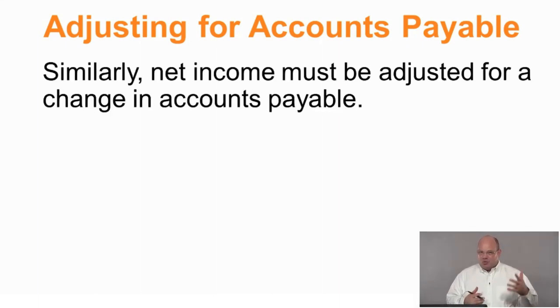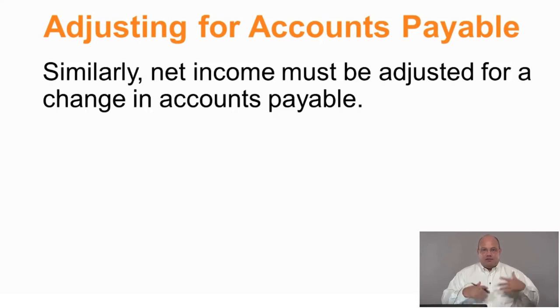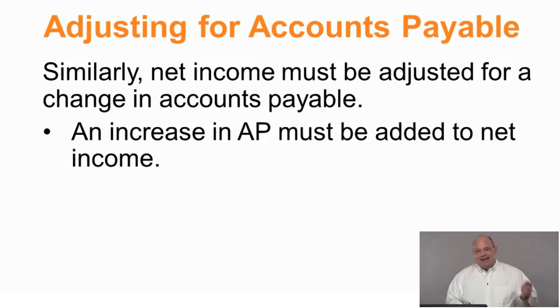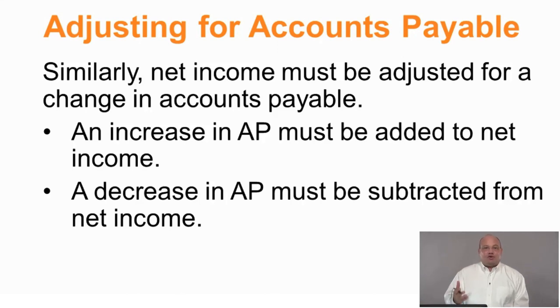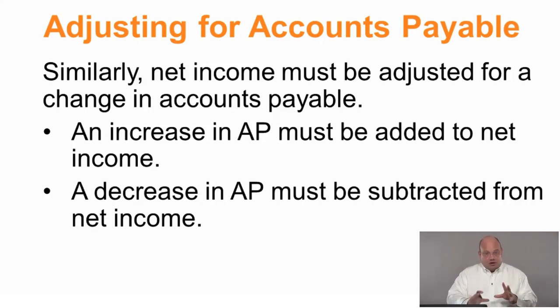We also need to make an adjustment for accounts payable. The adjustment for the change in accounts payable works the same way as receivables but in the opposite direction. On December 31st we bought something but didn't pay for it; on January 1st we paid for something but didn't buy it. An increase in accounts payable is added to net income; a decrease in accounts payable is subtracted from net income. This is different from receivables because payables are a liability and receivables are an asset.